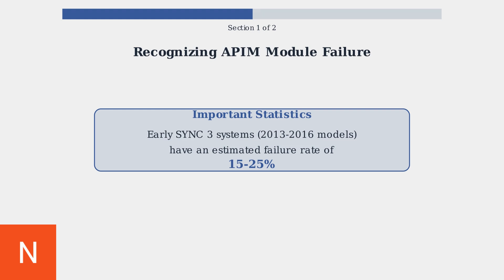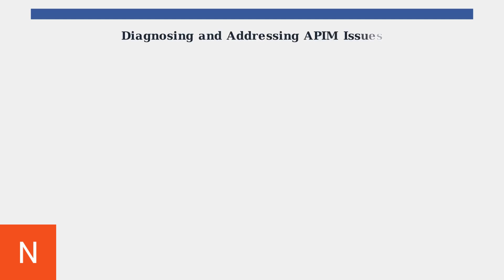Recognizing these symptoms early can help you address APIM issues before they become more severe and costly to repair. When your Ford's APIM module starts failing, proper diagnosis is crucial for finding the right solution. There are both professional and do-it-yourself methods to identify and address these issues.